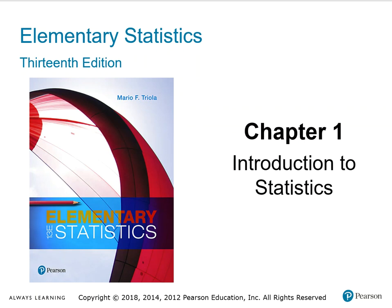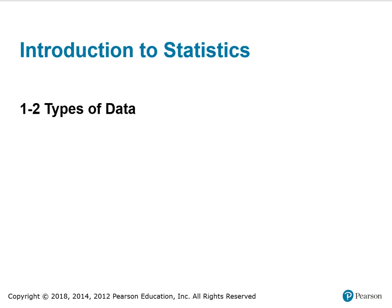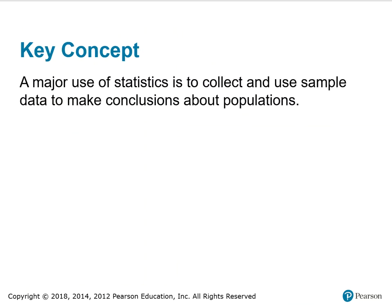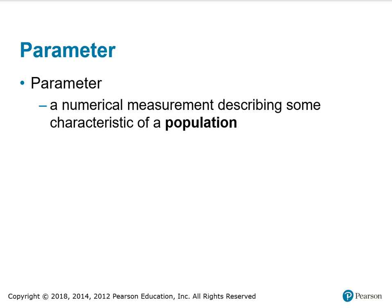Chapter 1: Introduction to Statistics, section 1.2 Types of Data. A major use of statistics is to collect and use sample data to make conclusions about populations. A parameter is a numerical measurement describing some characteristic of a population. A statistic is a numerical measurement describing some characteristic of a sample.